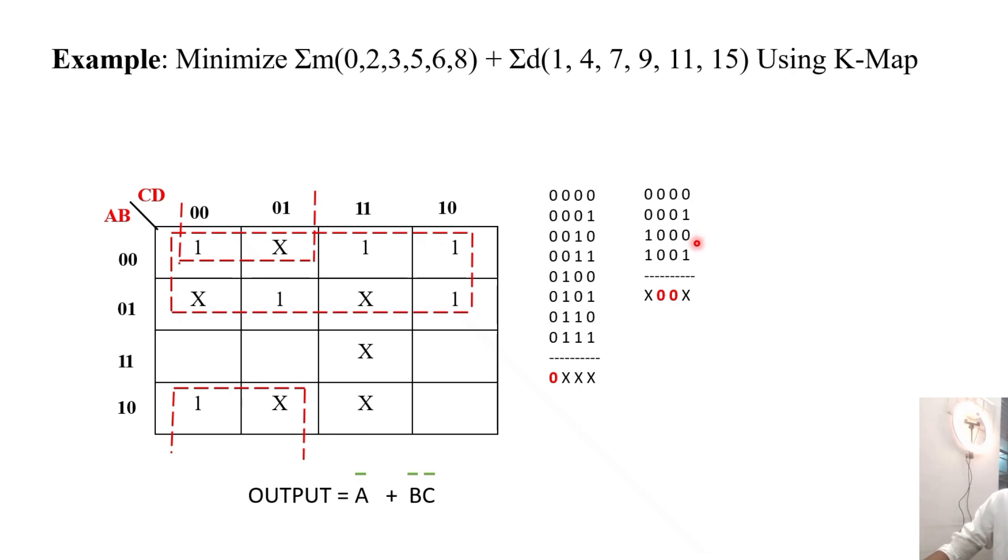Some don't cares are remaining in the cell without grouping. It's not mandatory to group all the X don't cares, but it is mandatory to group all ones as we already discussed. When we need, we can use these don't cares, or otherwise we can leave them as such.